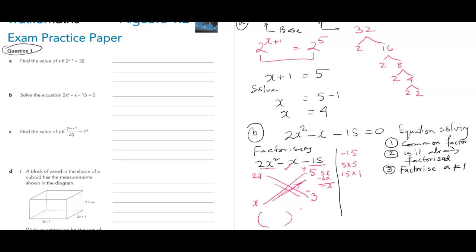And then the factors along those branches. It gives you 2x plus 5 and x minus 3. Back to the equation now. 2x plus 5 times x minus 3 equals 0.